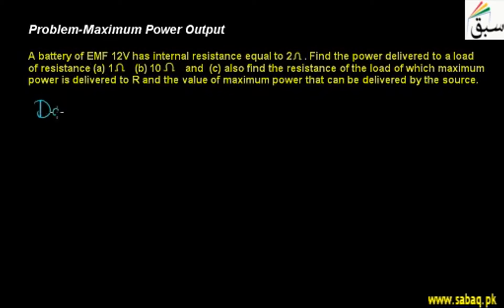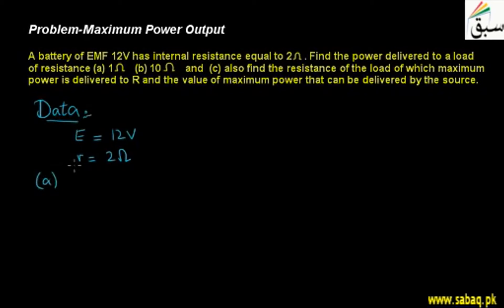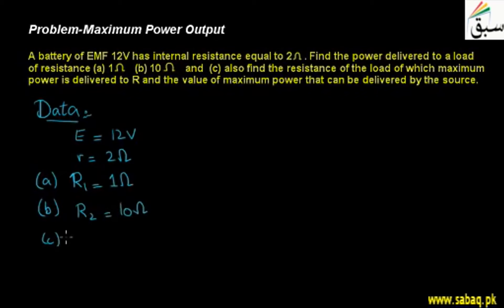Let's look at the data and see what is given. The EMF of the battery is 12 volts and the internal resistance is 2 ohms. For part A, the external device resistance R1 is 1 ohm. For part B, the resistance R2 is 10 ohms. For part C, we have to find resistance R3 and the maximum power Pmax.